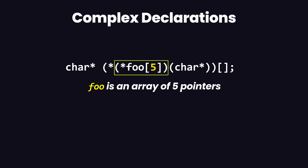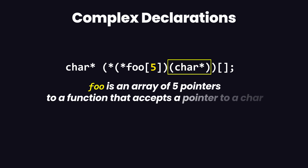By solving this inner parenthesis we get that foo is an array of five pointers. Now what does it point to? If we come out from this inner parenthesis, we have a function that takes in a pointer to a character. So we can say that foo is an array of five pointers to a function that accepts a pointer to a character.